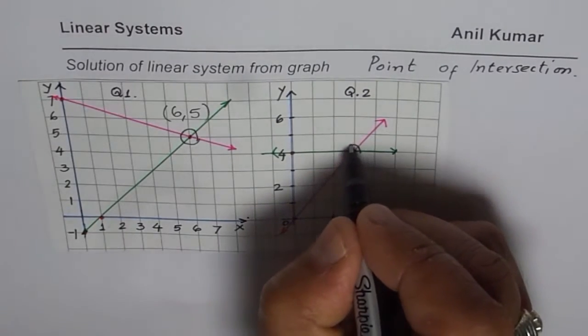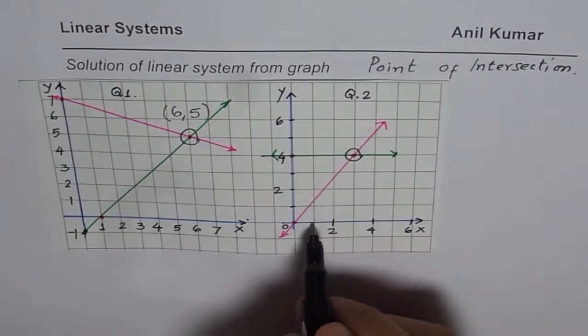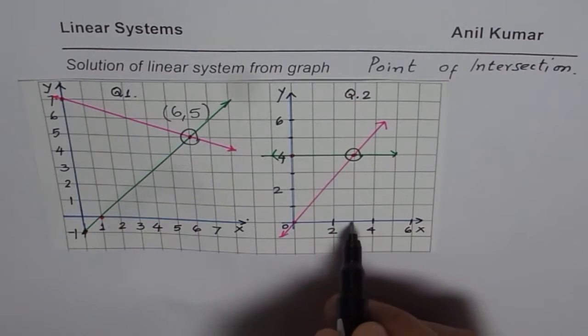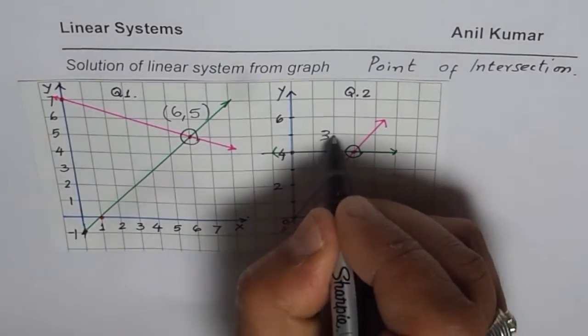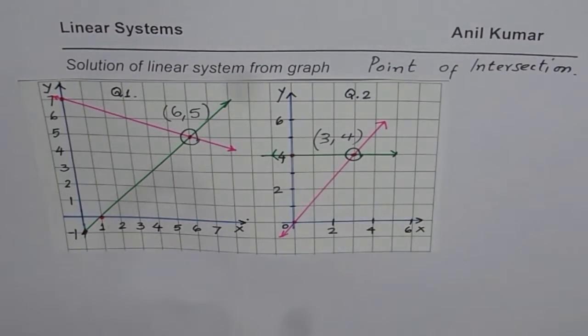About the second one, the point of intersection is right there, whose coordinate points are x values 1, 2, 3, y is 4. So it is (3, 4). That is how you can find or read from the given graph the solution of a linear system.